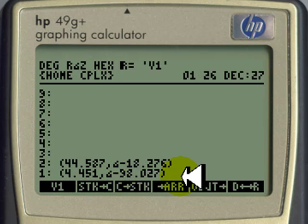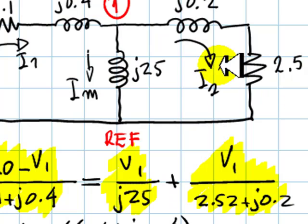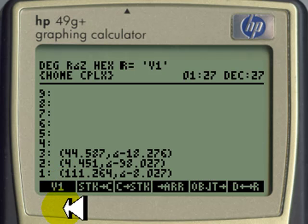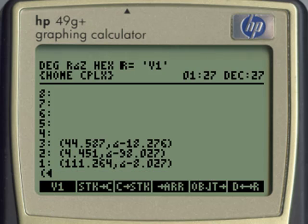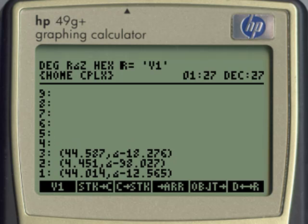I2 prime is V1 divided by 2.52, 0.2. V1, round parenthesis, 2.52 space 0.2, divide. That is I2 prime: 44 amps with negative 12.6 degrees. Those are the three currents that we have computed.